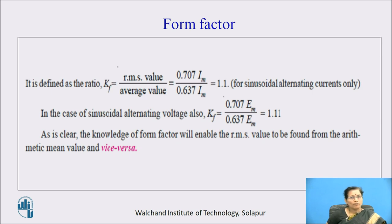And the knowledge of form factor will enable the RMS value to be found from the arithmetic mean value. And the importance of form factor is when we derive the formula for transformer, we can use this form factor. So in some applications, we can use this constant value 1.11 to calculate the RMS value if we know the average value. Directly we can calculate the RMS value.